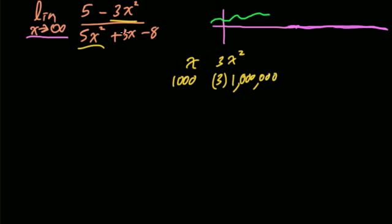How about what is just plain 3x? Well 3x if x is a thousand that's just going to be 3000. And then also realize what is 5 going to be? Well 5 is just going to be 5. 5 is just a constant. 5 isn't going to move at all.